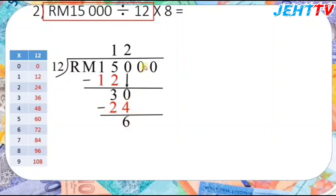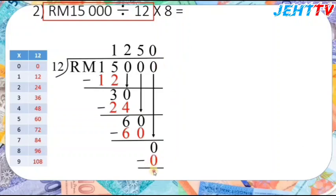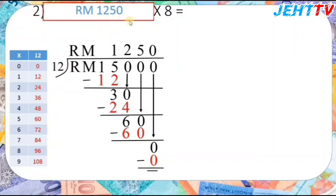30 minus 24 equals 6. Bring down the 0 to get 60. Yes, 12 times 5 equals 60, and 60 minus 60 is 0. Bring down the last 0 — 12 times 0 equals 0, and 0 minus 0 is 0. No more numbers, so the division is finished. Don't forget the RM — the answer is RM1,250.